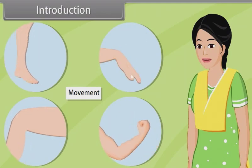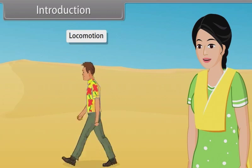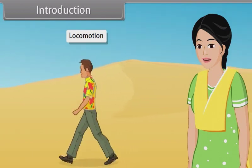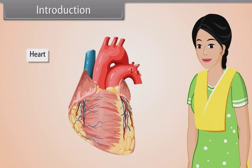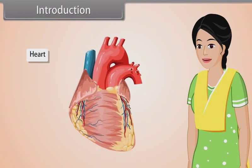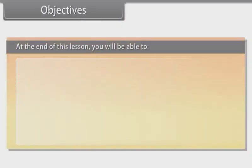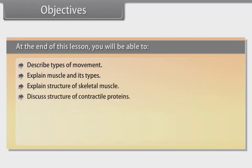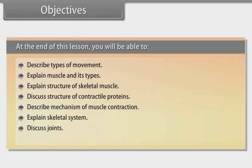At the end of this lesson, you will be able to: describe types of movement, explain muscle and its types, explain structure of skeletal muscles, discuss structure of contractile proteins, describe mechanism of muscle contraction, explain skeletal system, discuss joints, and list disorders of muscular and skeletal system.